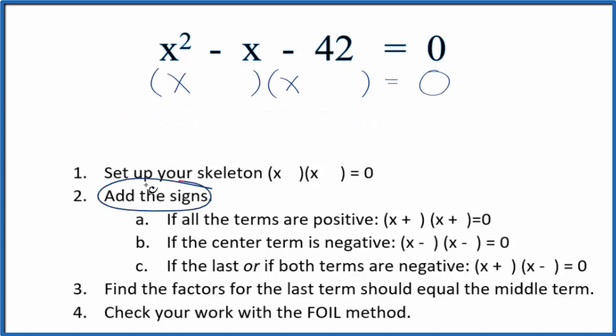Next we're going to add the signs into our skeleton equation. We see in the equation we have a minus and a minus. We have two negative signs, both terms are negative, so we'll use this format where we have a positive and a negative sign inside the parentheses.